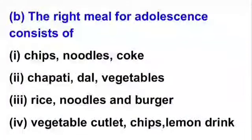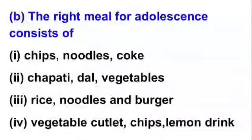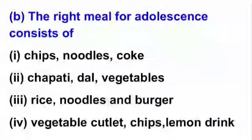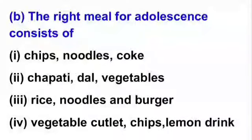Part B: The right meal for adolescents consists of — first option: chips, noodles and coke; second option: chapati, dal, vegetables; third option: rice, noodles and burger; fourth option: vegetable cutlet, chips, lemon ring. Out of these 4, which is the right meal for adolescents?